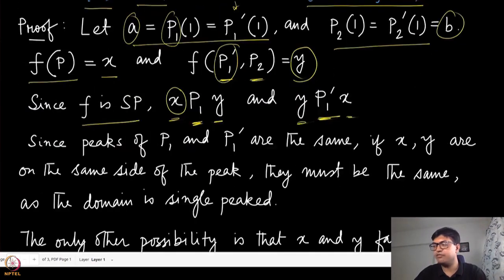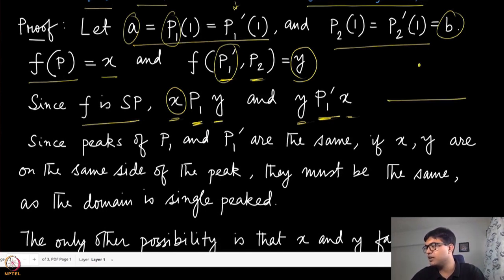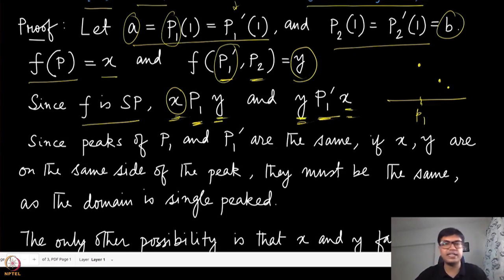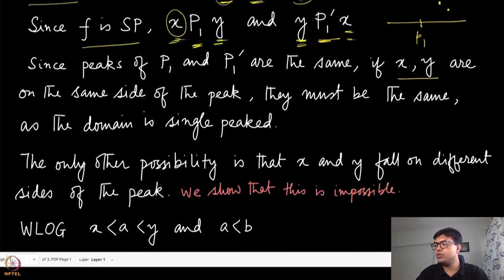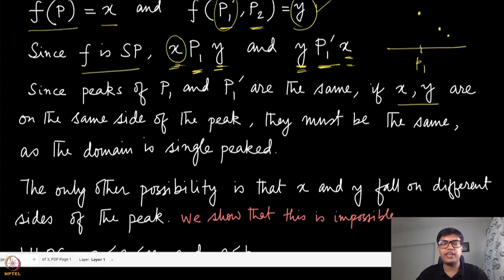Now since the peaks of P1 and P1-prime are the same, if X and Y are on the same side of the peak, then in one case X is preferred to Y and simultaneously Y is preferred to X. Because these preferences are anti-symmetric, if both hold then X and Y must be the same. So if they are on the same side they must be identical and we already get the result. The only remaining possibility is when X and Y are on different sides, but we are going to show that is also impossible.